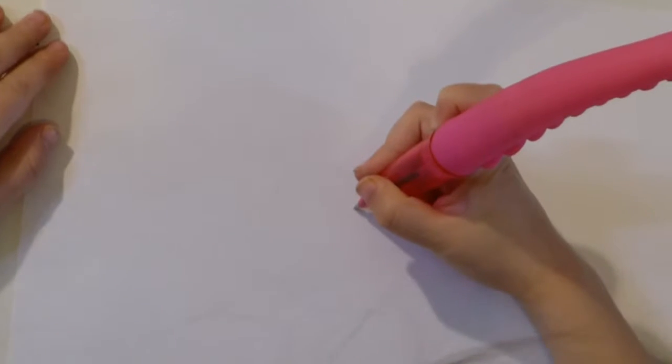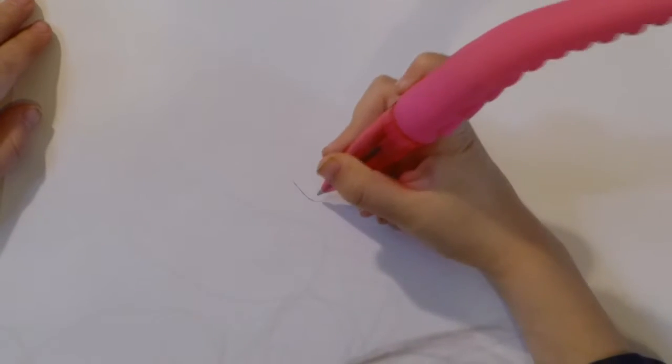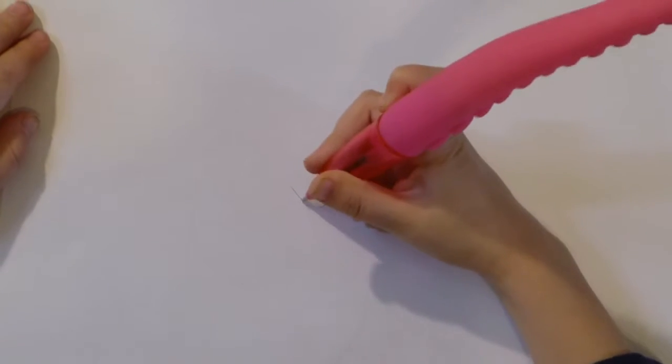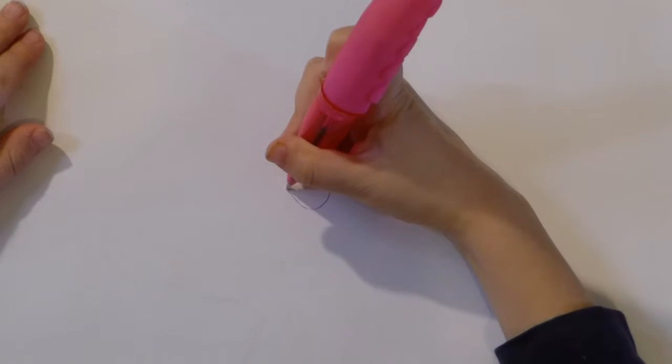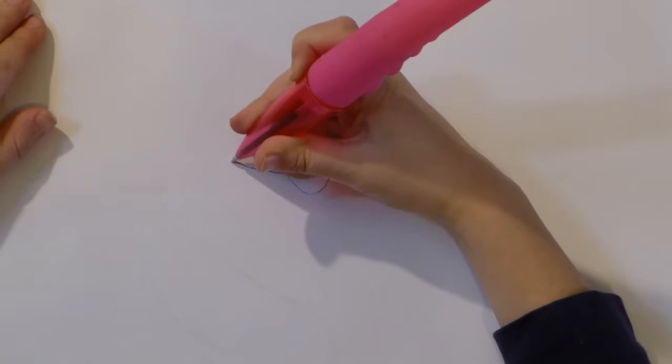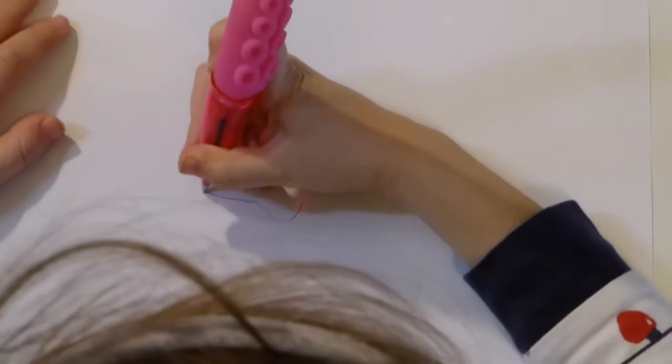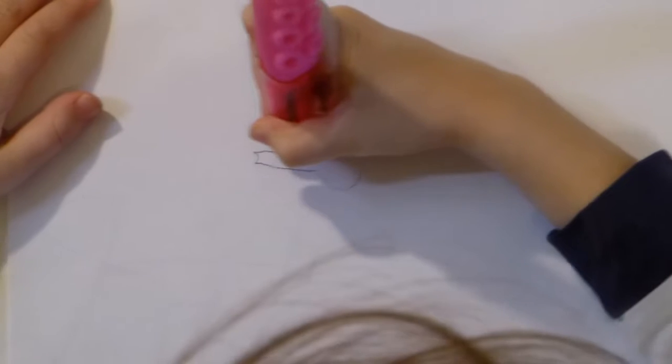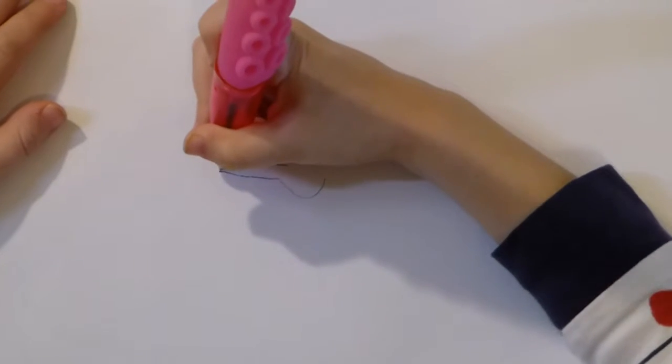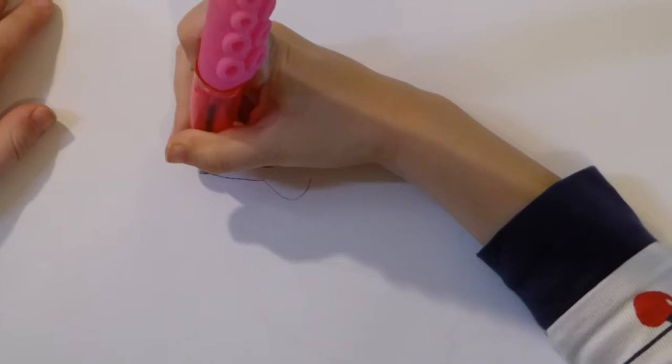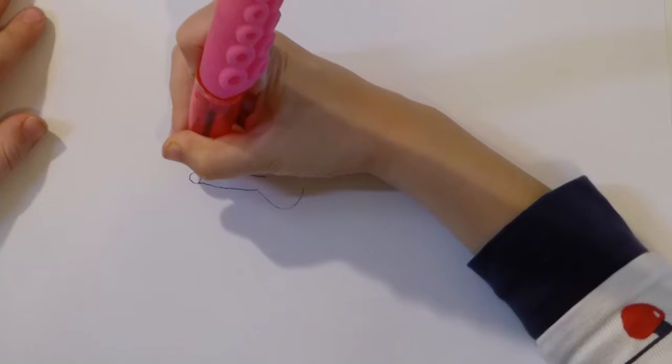First you make a little U shape like this. Then you draw a line just like this. Draw a little cup like this and draw a line back. Now draw a little sideways U to cover it to make the nose.